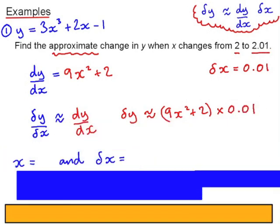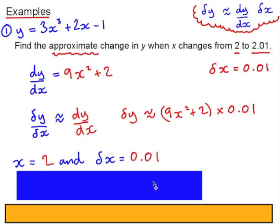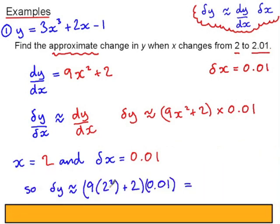Now my x value is 2, and delta x is 0.01. So substituting in these values, 9 times 4 is 36, plus 2 is 38. So 38 times 0.01, which is 0.38.